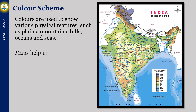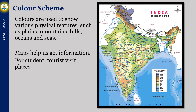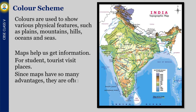Maps help us get information — for students, tourists visiting places. Since maps have so many advantages, they are often called our friends and guides. You can see that various colors are used to indicate height; also observe the symbols and directions on the map.